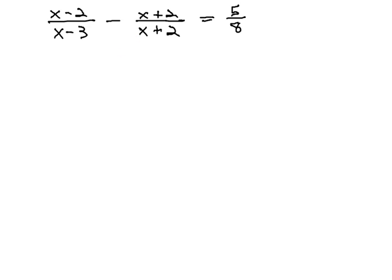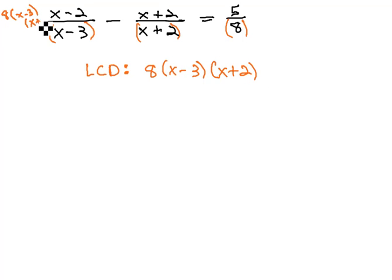First, to clear the fractions and make it easier to solve, we need to identify the least common denominator. We see factors of x-3, x+2, and 8 in the denominators. So, we'll multiply each term by 8(x-3)(x+2).